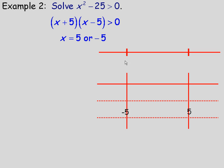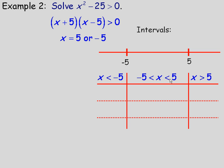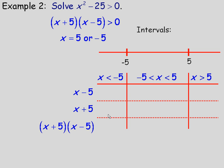We place negative 5 and 5 on the number line, creating three intervals: x less than negative 5, negative 5 to 5, and x greater than 5. In a sign chart table, we list each factor — x minus 5 and x plus 5 — and their product. We check the sign of each factor on each interval to determine where the product x squared minus 25 is positive or negative, since we're looking for where it's greater than 0.